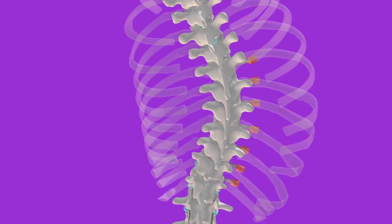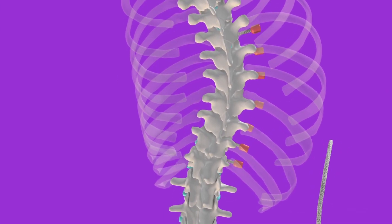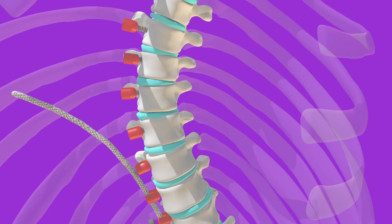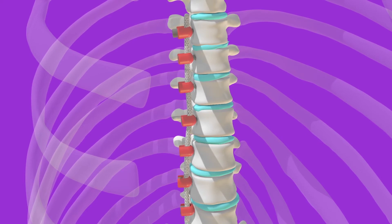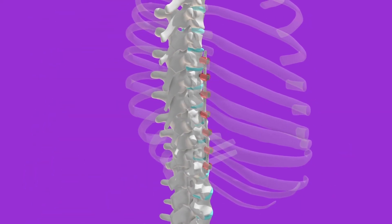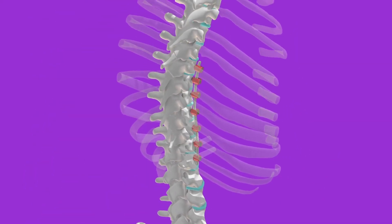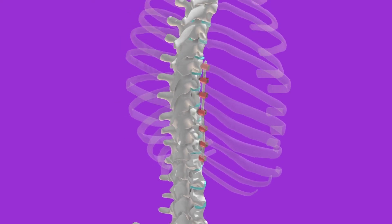This procedure uses a tether, which is like a strong cord, that is attached to the spine with screws to correct the curve as the patient grows. Because there is no fusion with VBT, more mobility is potentially maintained after surgery.